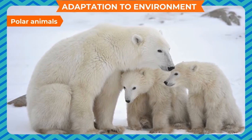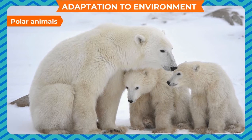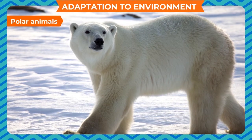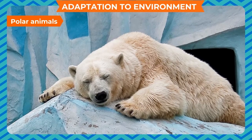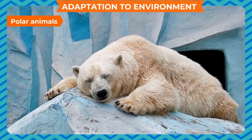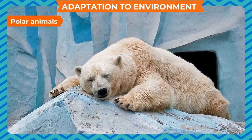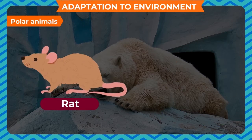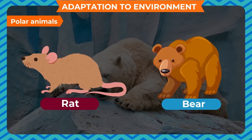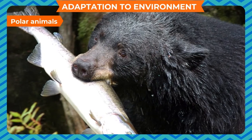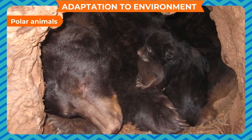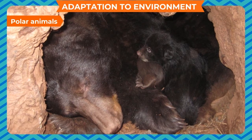Polar Animals. Some animals such as polar bears live in very cold places. They have thick fur to protect themselves from the harsh cold. They also have a thick layer of fat under their skin. In winter, polar animals become inactive and sleep for a few months. This is called hibernation. Some animals such as frogs, lizards, rats, bears, etc. cannot bear extreme cold. So they eat as much as possible in summer and sleep for several months in holes or caves and undergo hibernation.